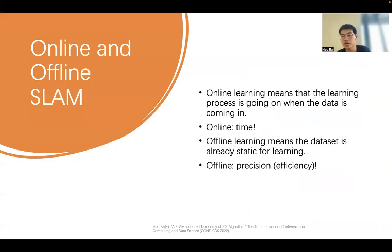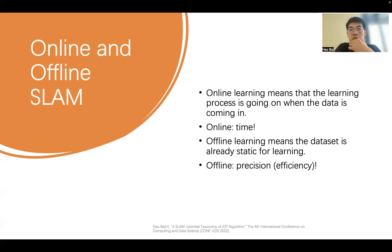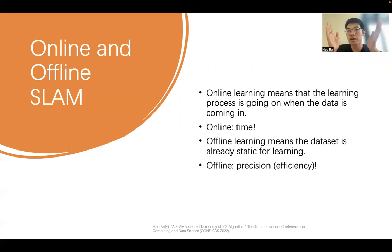There can be many categories of SLAM as it's a very large topic. Here we focus on online and offline SLAM. Online SLAM is like streaming a movie — you can't jump around freely; you need to load data as you go. Offline SLAM is like downloading the movie: you have all the global data available at once and can process it freely.